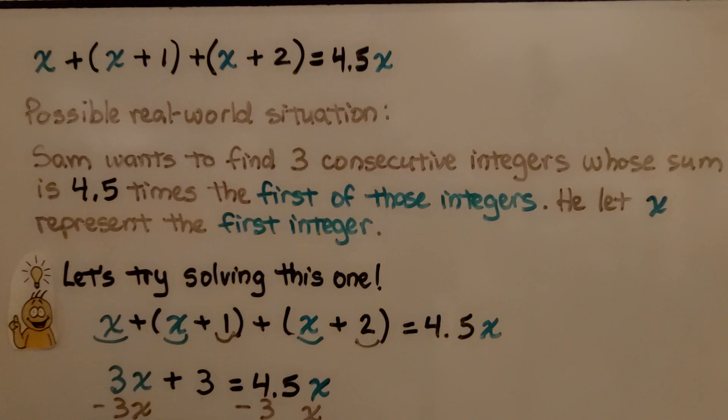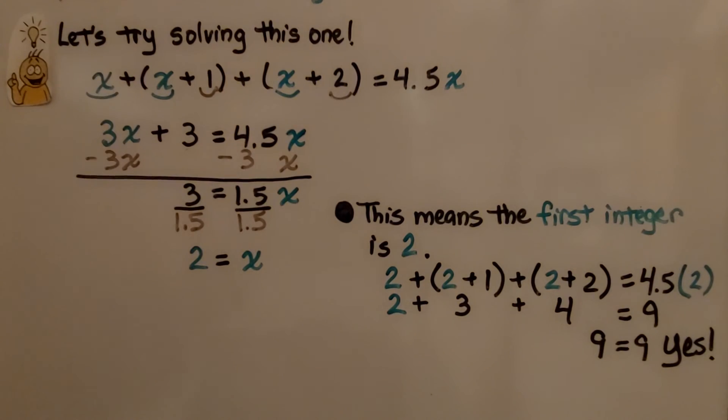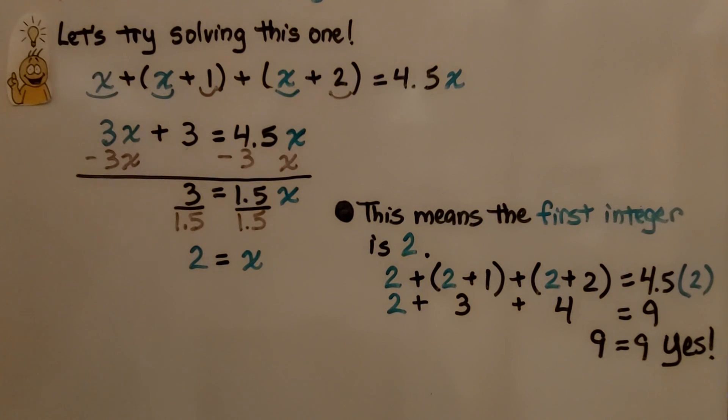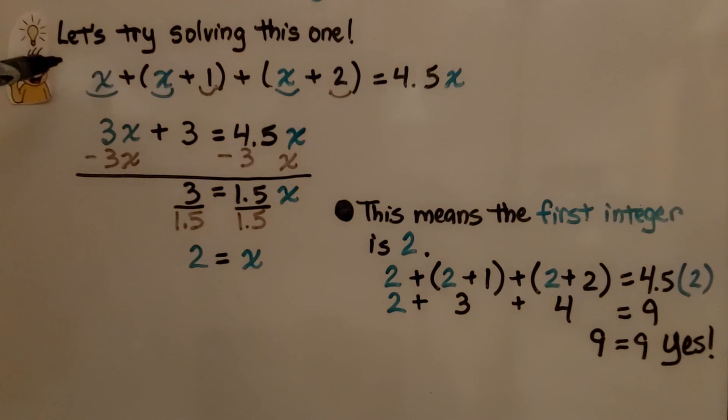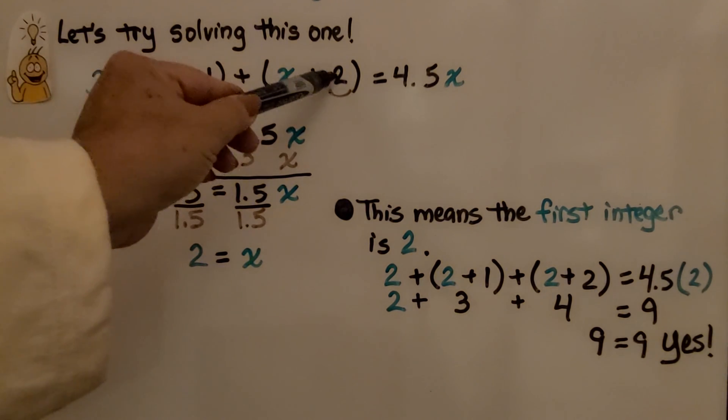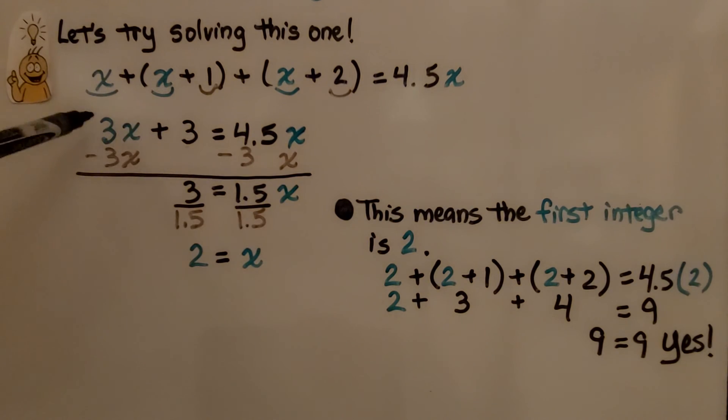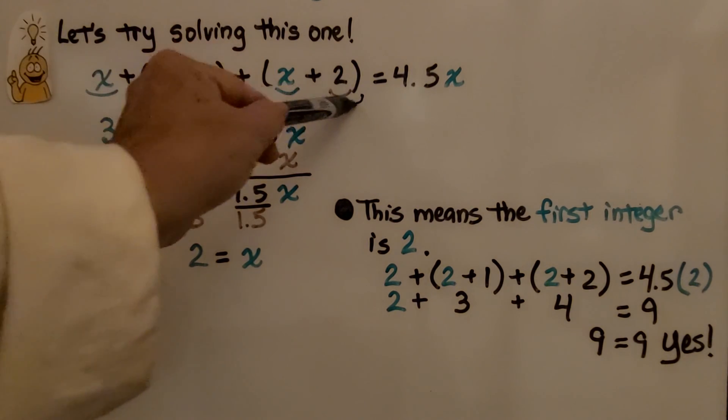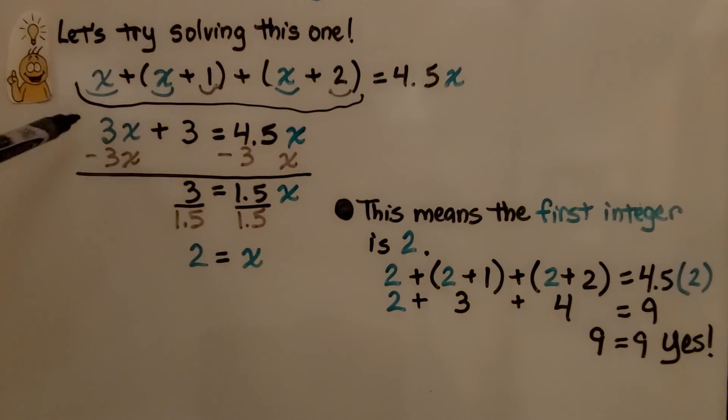Now, let's try solving this one. The first thing we would do is combine the like terms on the left side of the equation. We have an x, an x, and an x. That means we have three x's. We have 3x. And we have 1 plus 2. That's 3. So really, this entire left side of the equation is really 3x plus 3, and it's equal to 4.5x.